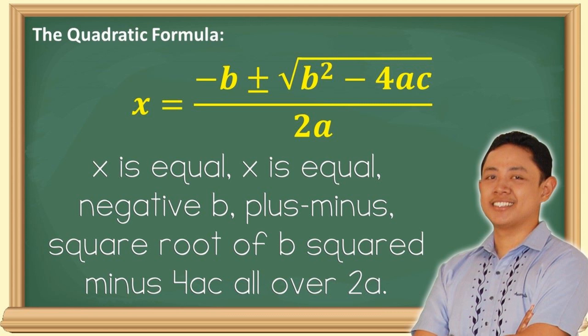This time, let's make it faster. x is equal, x is equal, negative b plus minus square root of b squared minus 4ac, all over 2a.